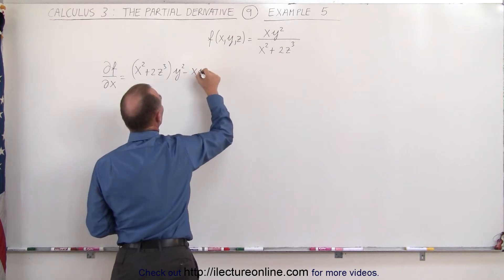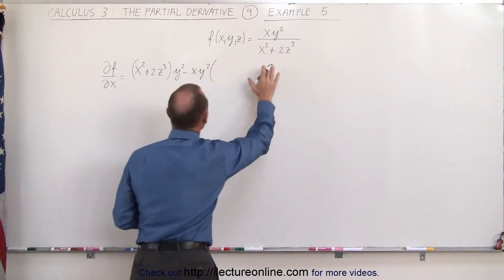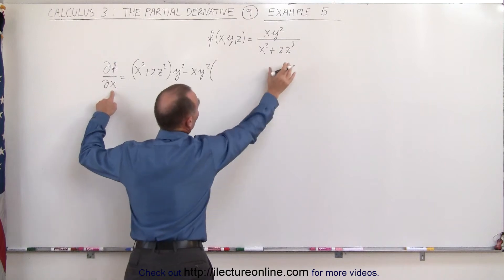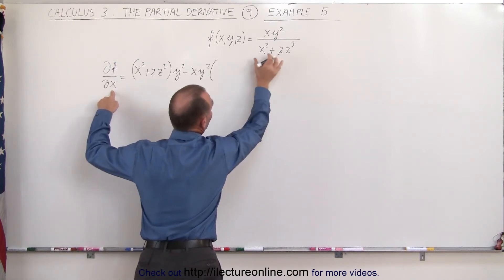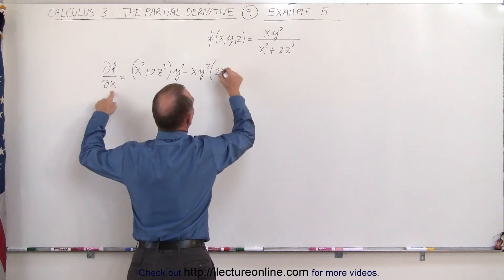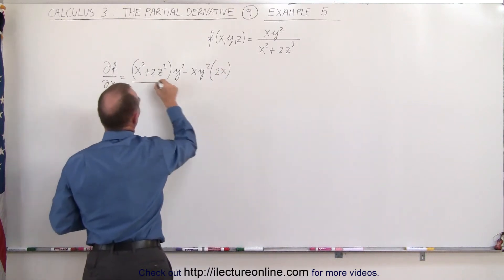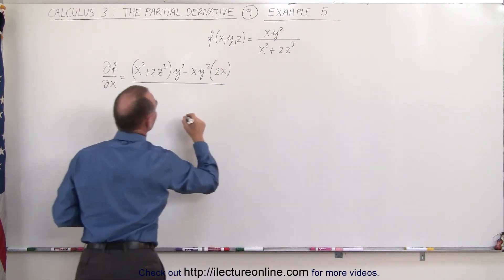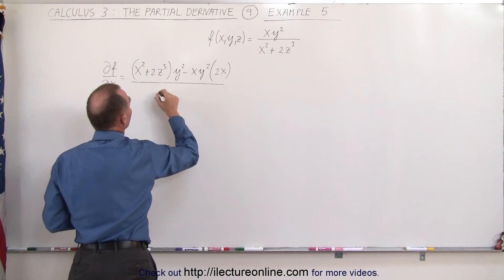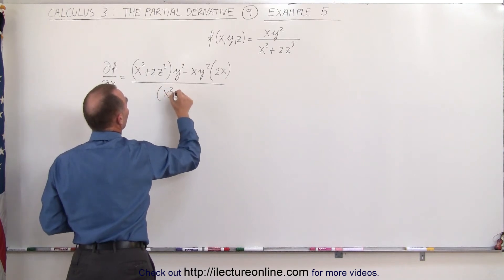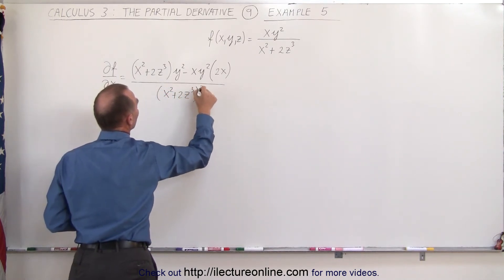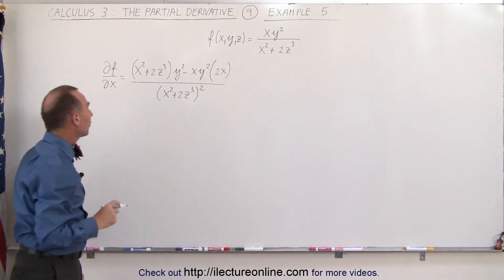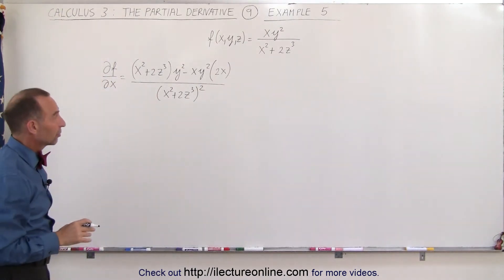Minus the numerator, x y squared, times the derivative of the denominator with respect to x. Notice this term will go to 0 because that's a constant, and here we get 2x as the derivative. Then we take the whole thing and divide it by the square of the denominator, x squared plus 2z cubed, quantity squared. That's the partial of the function with respect to x.